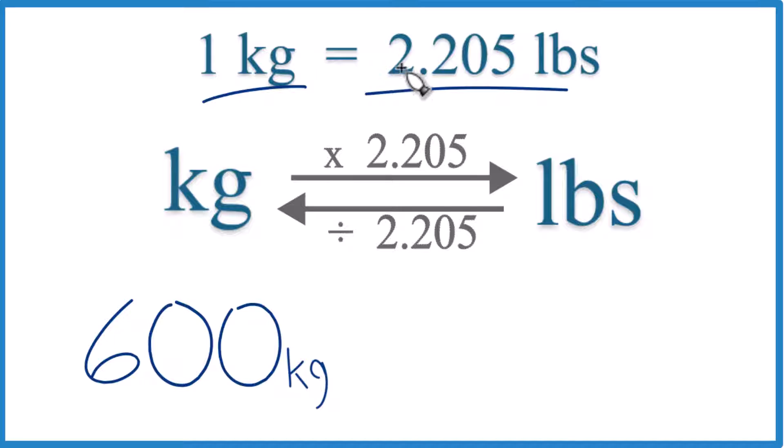And think about it, if one kilogram is 2.205 pounds, 600 kilograms would be just 600 times this number. So this is called a conversion factor. We use it when we go from kilograms to pounds or pounds to kilograms.